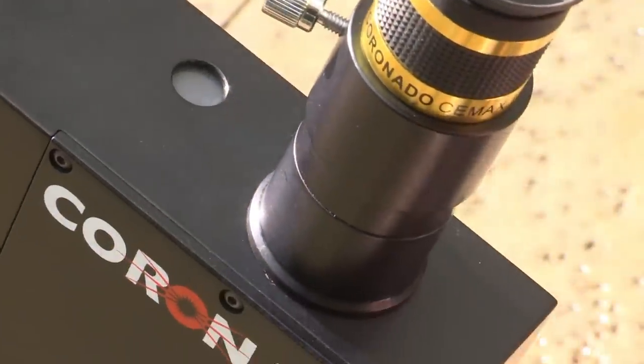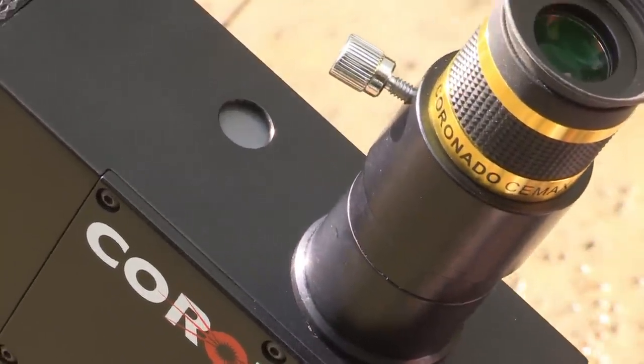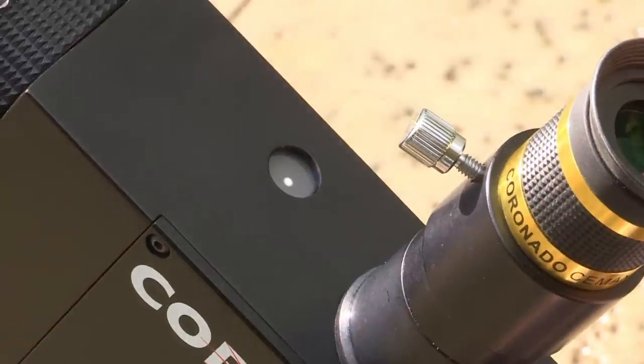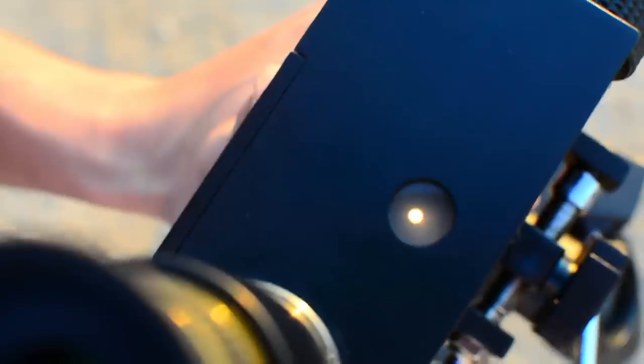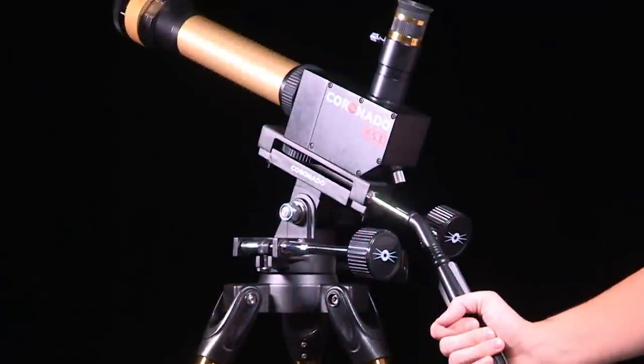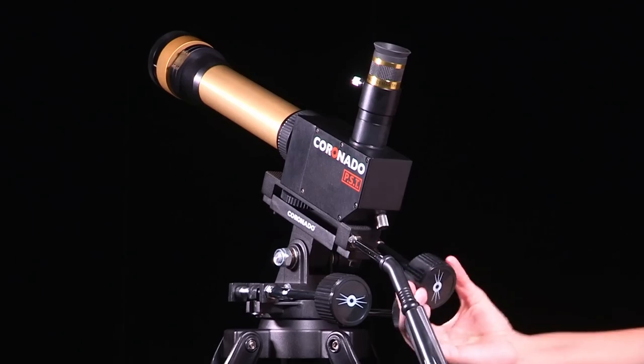The PST has been designed with a patented internal sun spotting device. When properly aligned on the sun, a small pinhole on the front of the face of the PST body will let in light that will be projected onto the opaque glass window on the top near the eyepiece holder, making sun spotting a breeze.